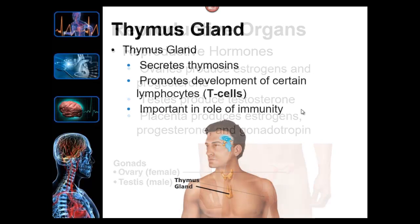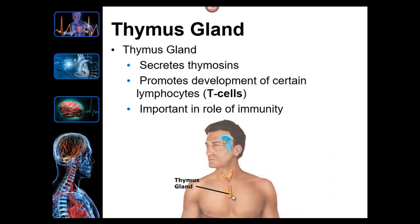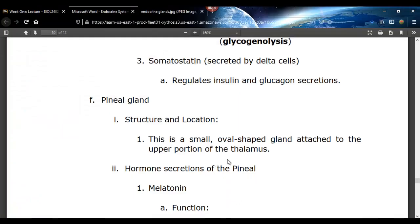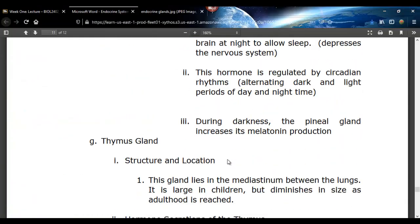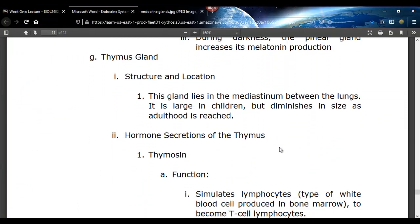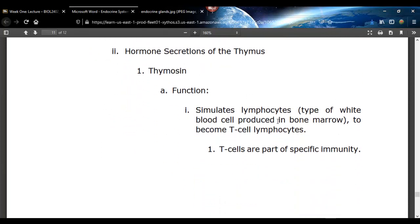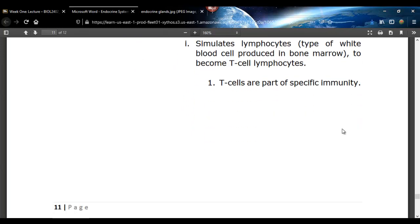The thymus is a gland that sits right on top of the heart. It secretes a hormone called thymocin, which causes lymphocytes — blood cells produced by bone marrow — to become T-cells, which are involved in specific immunity. T-cells account for about 80% of the specific immune response, including responses to viruses. The thymus lies in the mediastinum between the lungs, is large in kids, and gets smaller in adults.